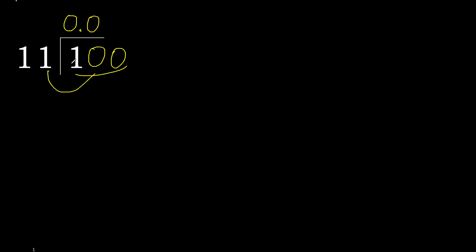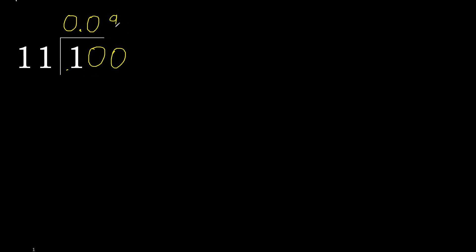100 is not less, therefore work with 100. 11 multiplied by which number is nearest to 100 but not greater? 11 multiplied by 9 is 99 — not greater. Subtract. Next: that is not a number, therefore complete. Always complete with 0.